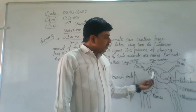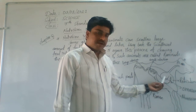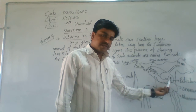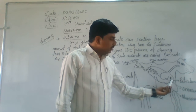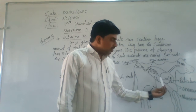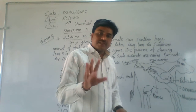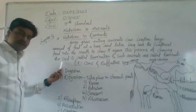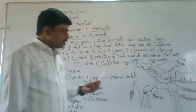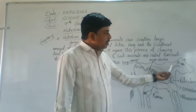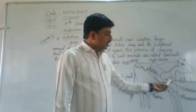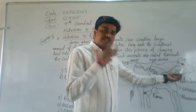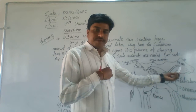The partially digested food then enters the second main part, which is the reticulum. The partially digested food is called cud. This cud is brought back to the mouth, and the animal chews it again and re-swallows it.